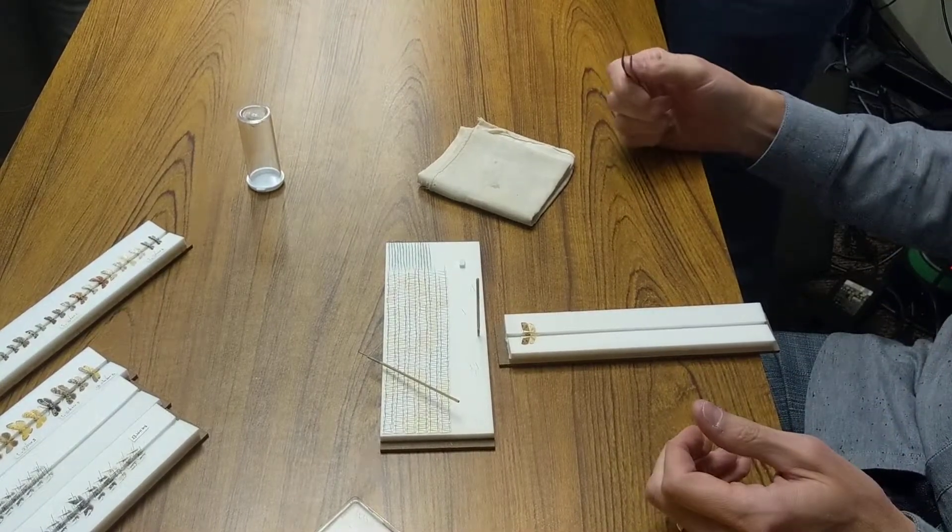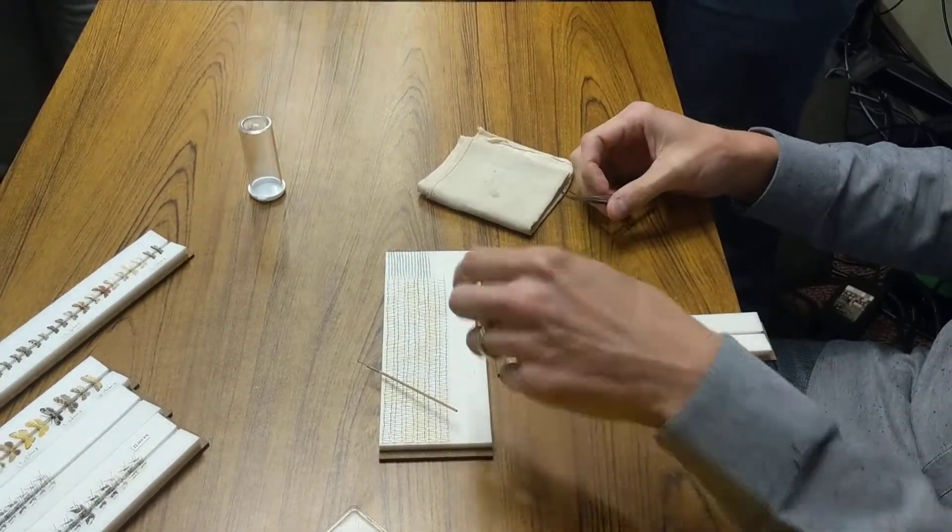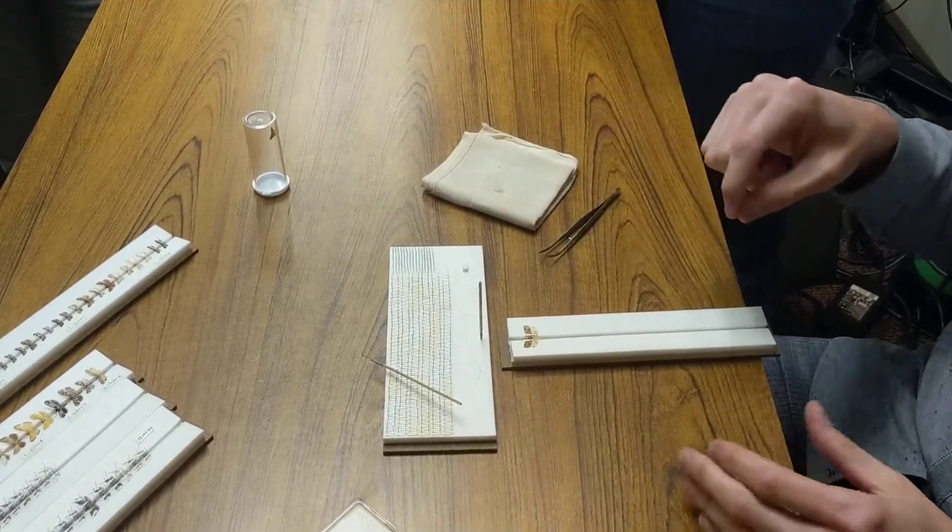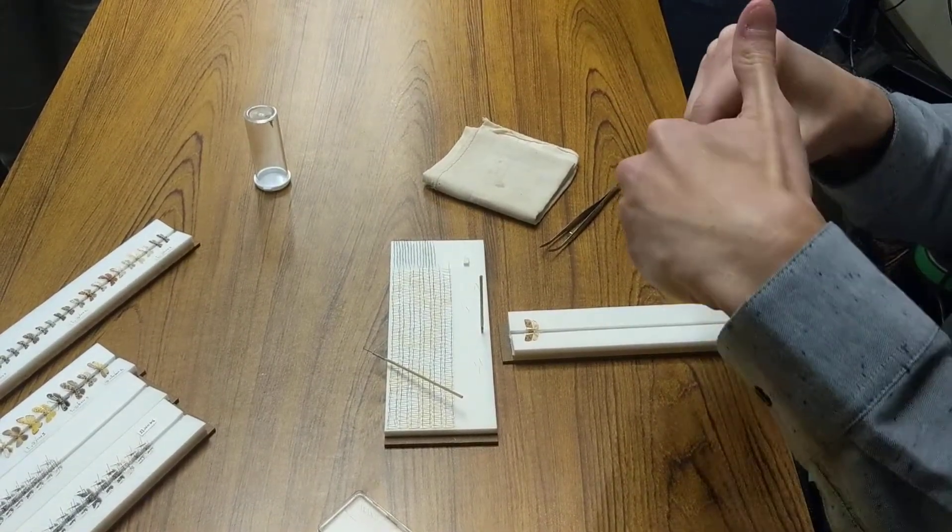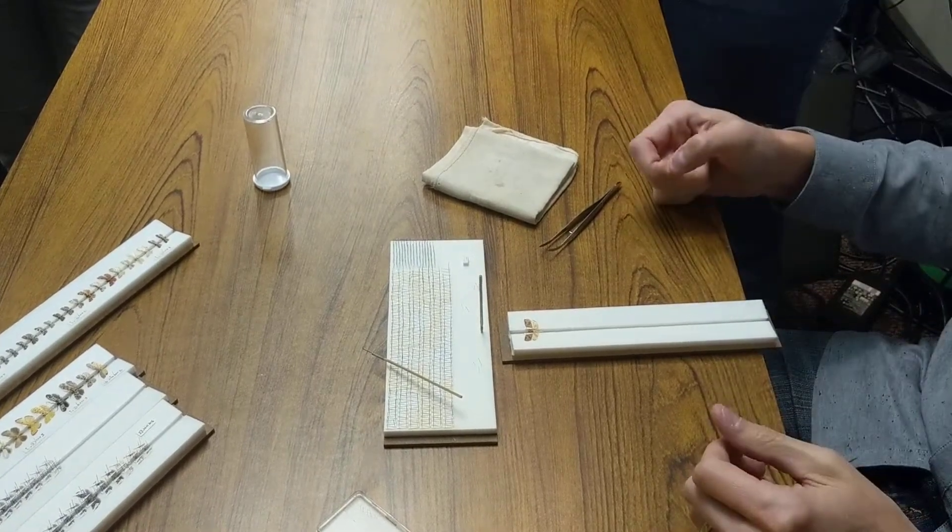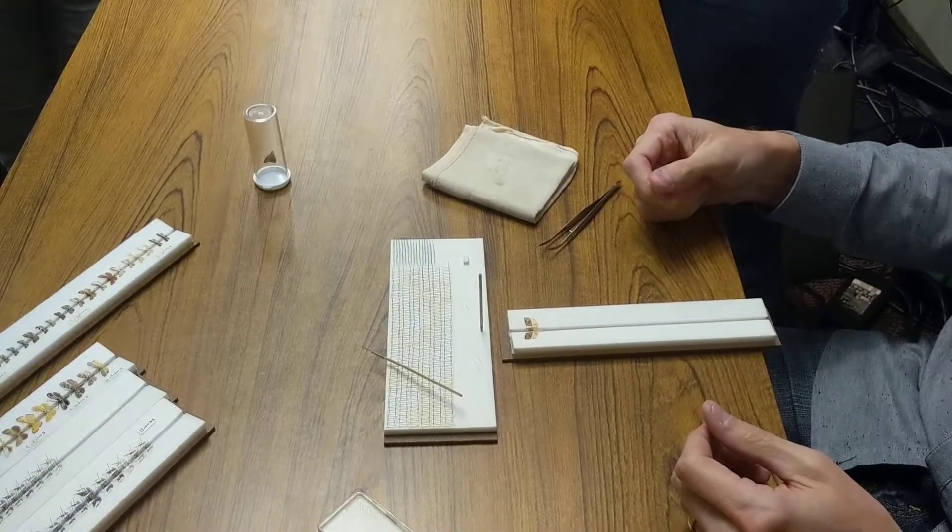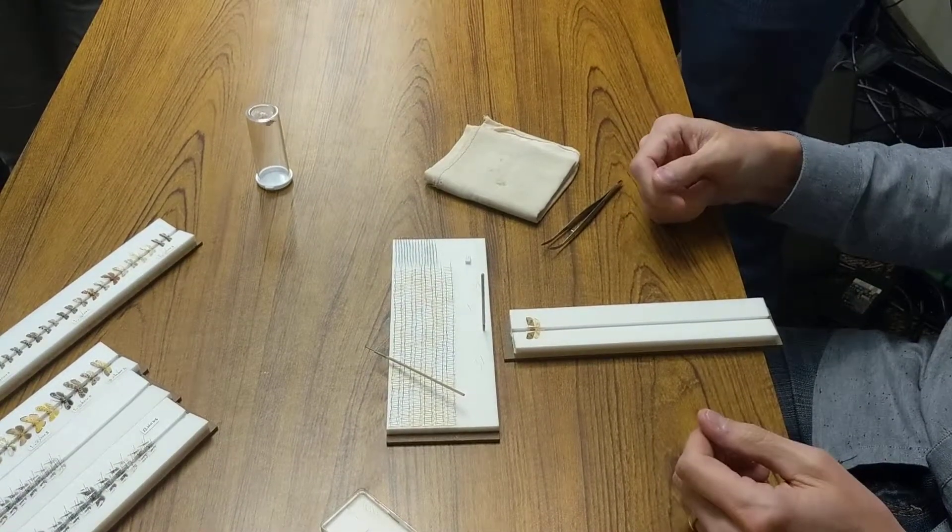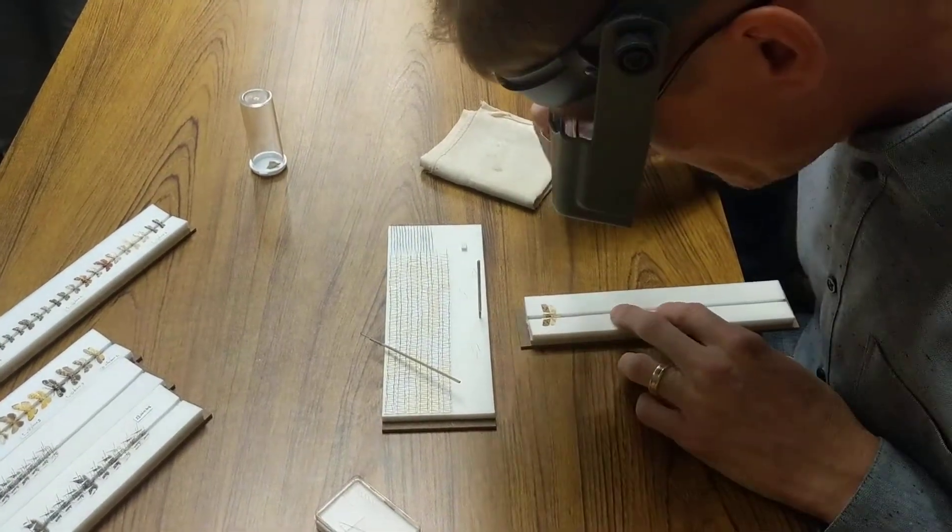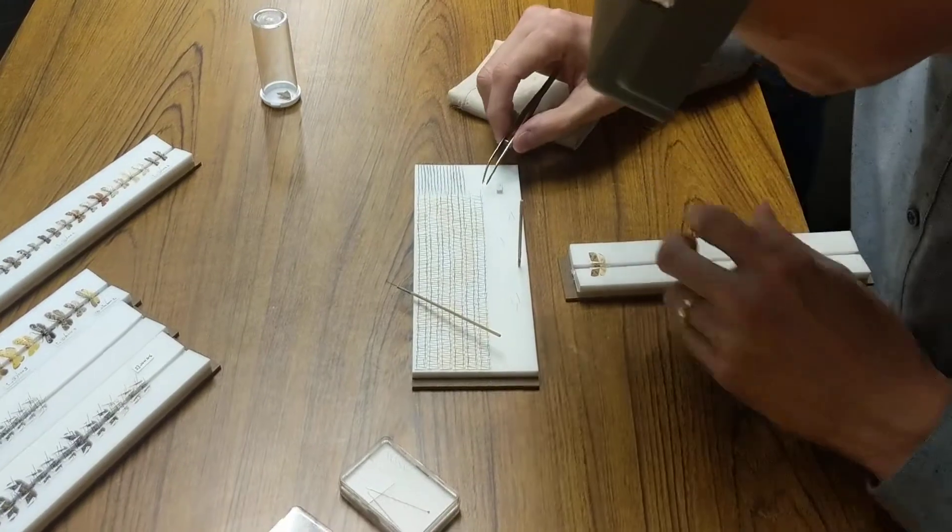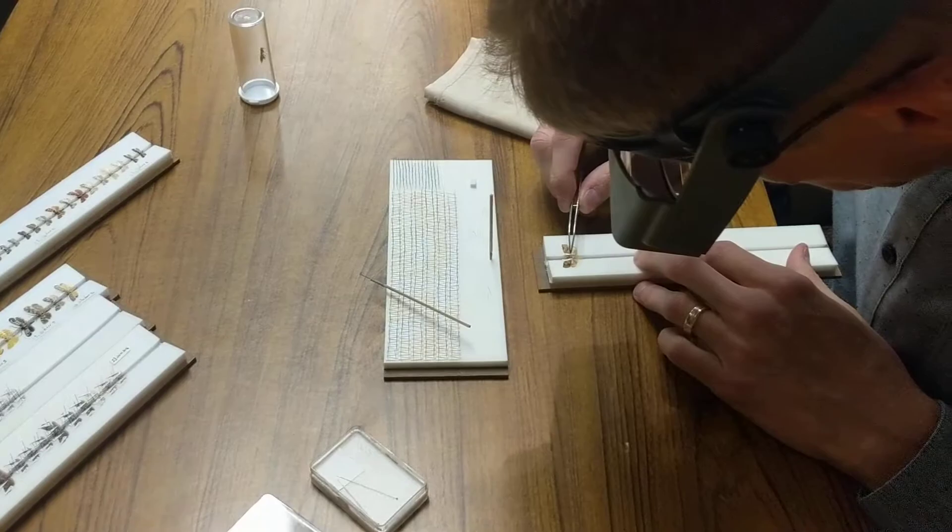This is the same for especially macros. If you need a really big moth like a saturnid or something, you would use a bigger pin, but you would put it right against the edge of that main vein on the costa and move it up. Put it in the middle of the wing and it'll rip. But these guys, if they're fresh, it doesn't matter a whole lot. It doesn't take much to move them.